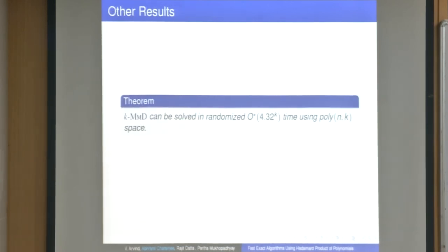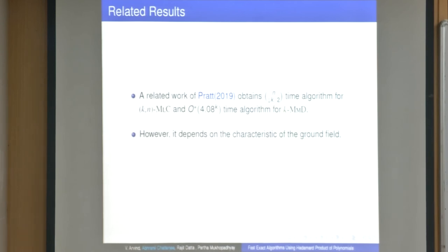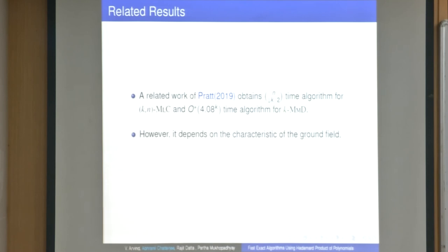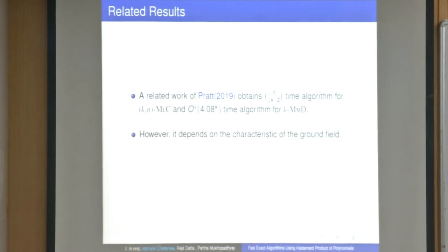The second result is for the KMMD problem. For monotone circuits, Cootes and Williams reduced all those combinatorial problems to KMMD. For general circuits, we give a 4.32^k algorithm in polynomial space. A related result by Pratt: after our paper, Pratt also considered these two problems and for KNMLC achieves n↓^(k/2) for general circuits, and a 4.08^k algorithm for multilinear monomial detection using apolarity and inner products. However, his algorithm depends on the characteristic of the ground field, whereas our algorithm is independent of the characteristic and also works for small finite fields. Thank you.